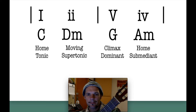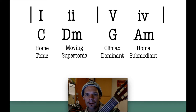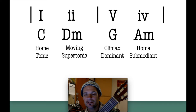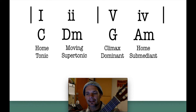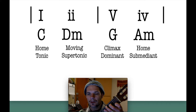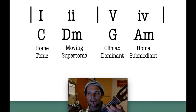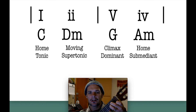You can also substitute the fourth chord for the second chord, as they are both moving chords. However the second chord is also a minor, so in comparison the chord progression will sound a little darker, and it sounds like this. There's one, there's two, there's five, and there's six.